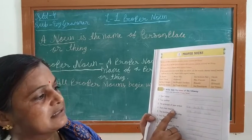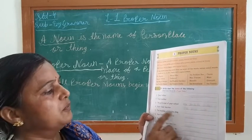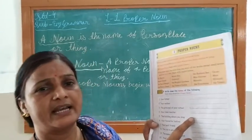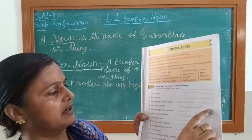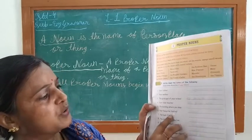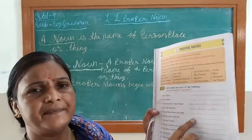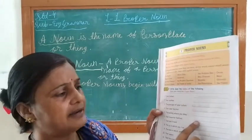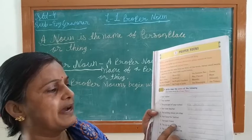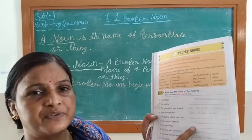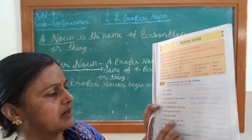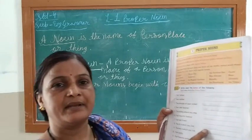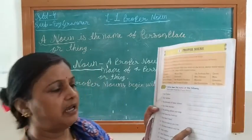Your class teacher — Mrs. Sonia Sao. The building where you stay — write the name of your residence. Your favourite festival — any festival you like; here I write 'Diwali.' Your best friend — write your best friend's name. The city in which you live — I write 'Gujarat.'